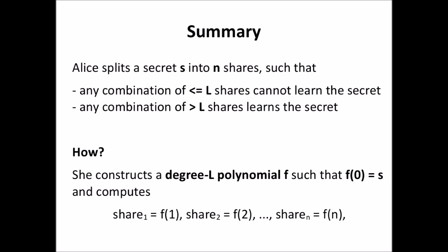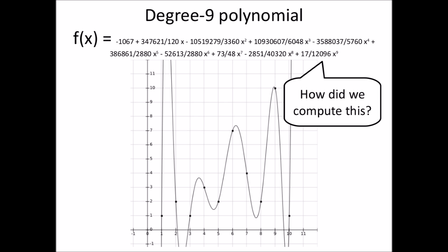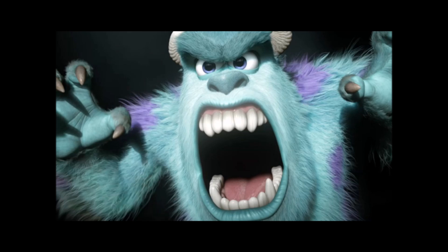So, generalizing our summary: Alice can split her secret by choosing a secret polynomial of degree L, such that when x is 0, this polynomial evaluates to her secret value. She then computes the shares of the secret as points of that polynomial. The only question that remains is how to retrieve the polynomial once we have combined the shares — how do we compute this function from those 10 points? It turns out that this is where our monster, the Lagrange interpolation, is needed.